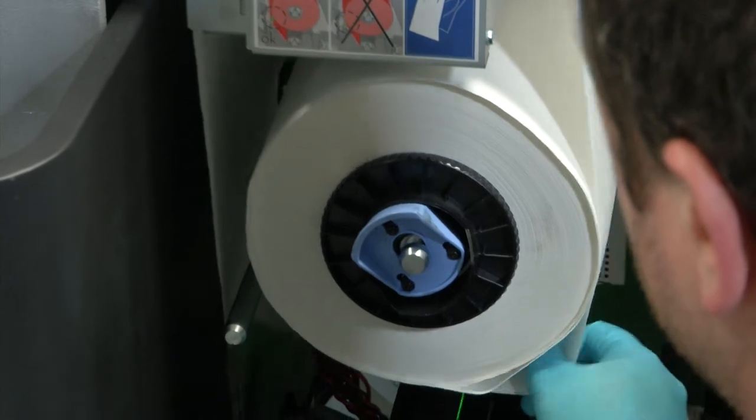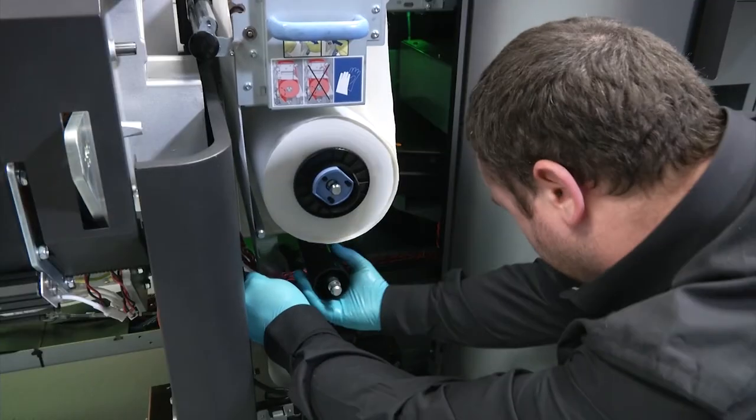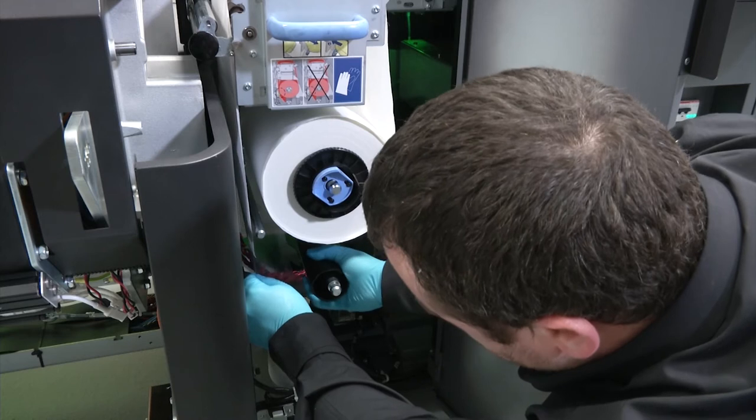Finally, thread the leading edge down the left side of the assembly. Do not thread the leading edge behind the roller on the left. This roller needs to stay between the roll and the material.